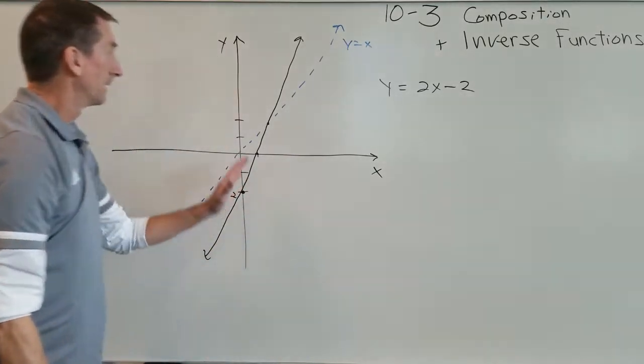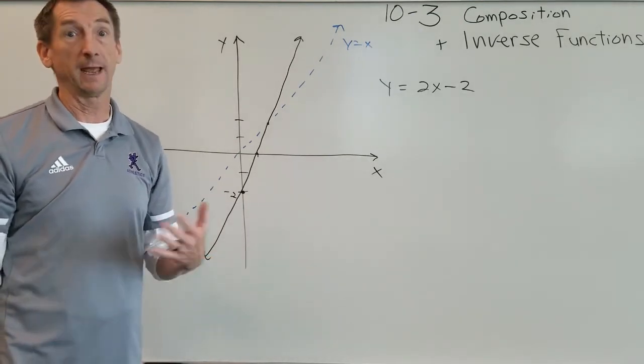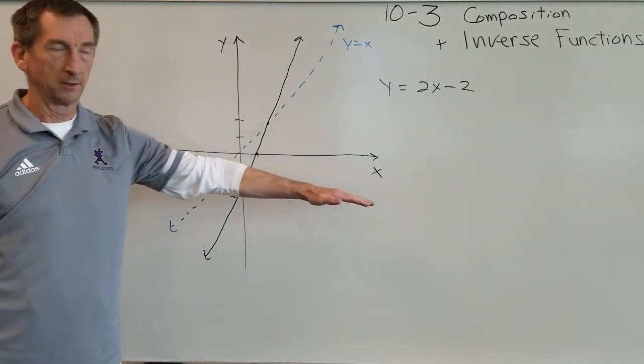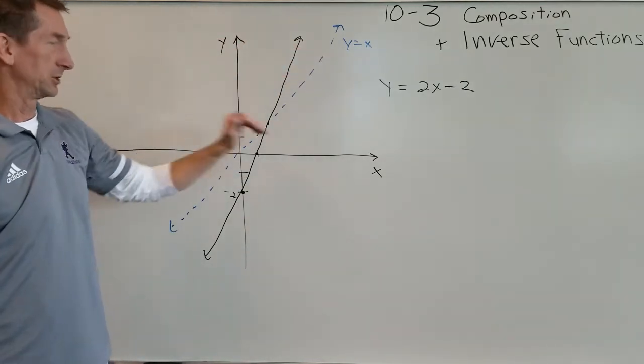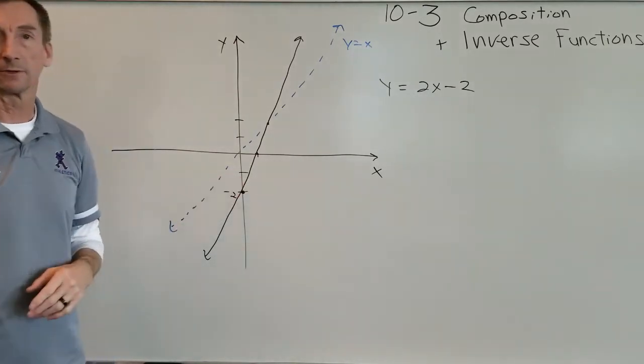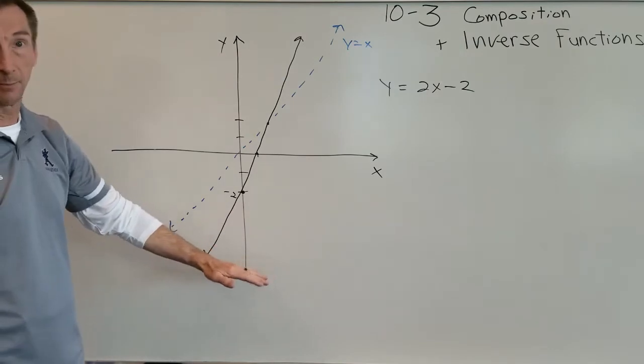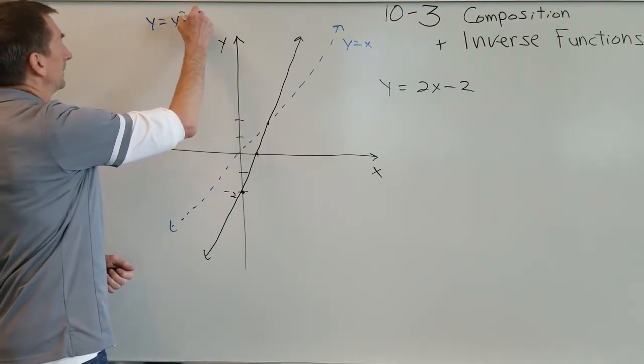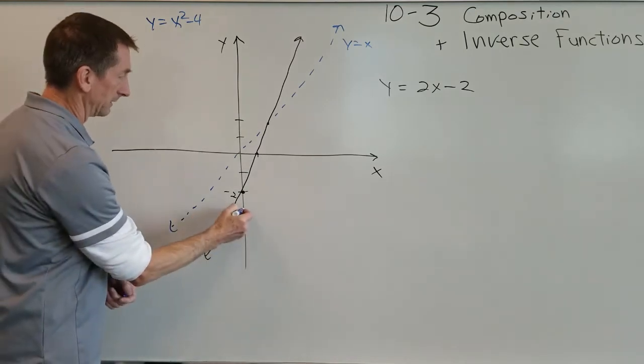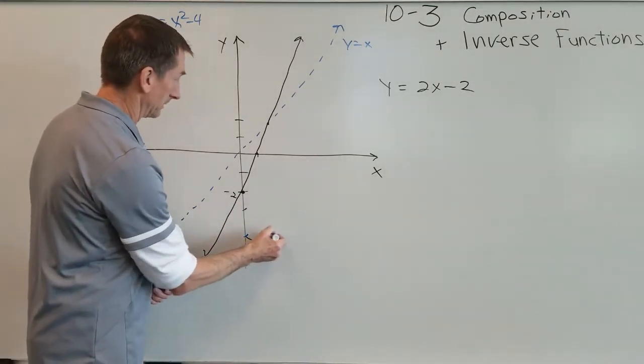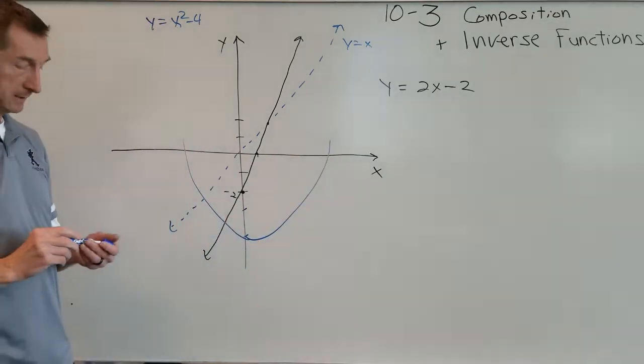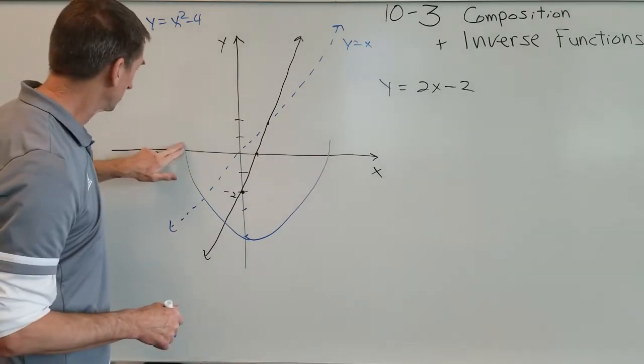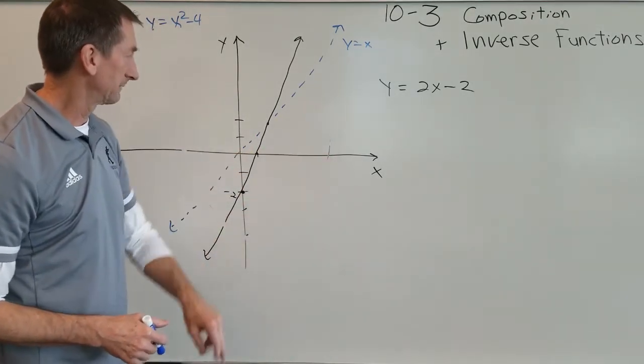Now suppose I want to find an inverse. First of all, I need to find out if it has an inverse, and the way we tell that is the horizontal line test. If you can draw a horizontal line through every point of that function and it only touches once, then you can take the inverse of that function. This is a nice line, so I can tell it passes the horizontal line test. What if I had, say, y equals x squared minus 4. That's going to be a parabola. If I were to try to do the horizontal line test, it's going to touch that function twice. It doesn't have an inverse. So let's just get rid of that. We cannot take the inverse of that function.